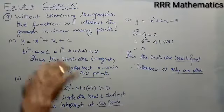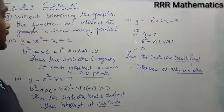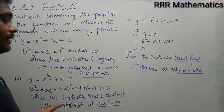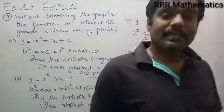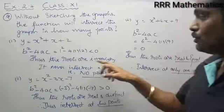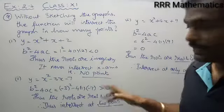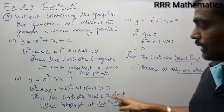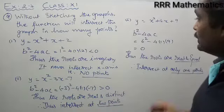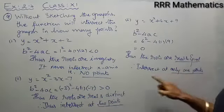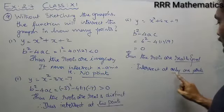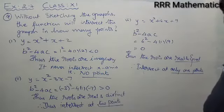So, without using the graph, you can determine — with the help of the discriminant value — whether the curve meets the x-axis at 2 points, 1 point, or no points. If the roots are imaginary, it never intersects the x-axis. If the roots are real and distinct, it intersects at 2 points. If the roots are real and equal, it intersects at only 1 point. Got it?